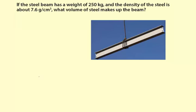If the steel beam has a weight of 250 kilograms and the density of the steel is about 7.6 grams per cubic centimeter, what volume of steel makes up the beam?